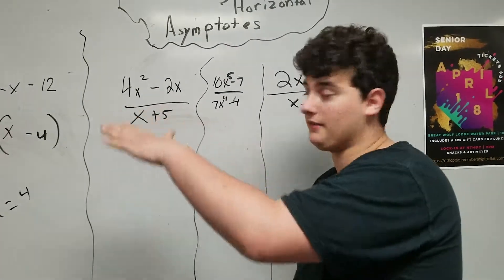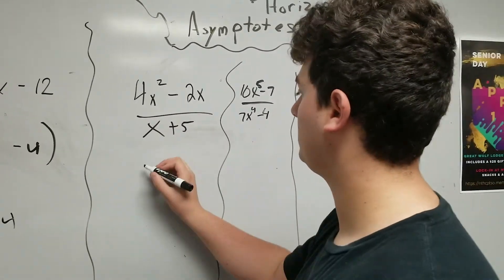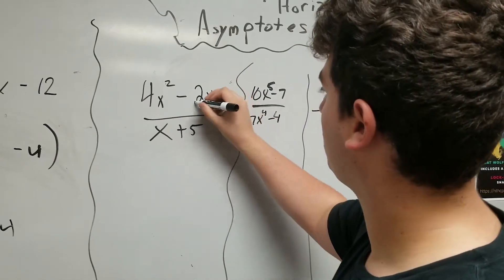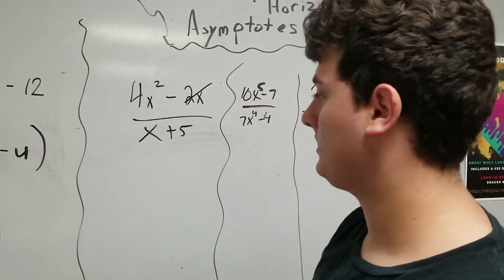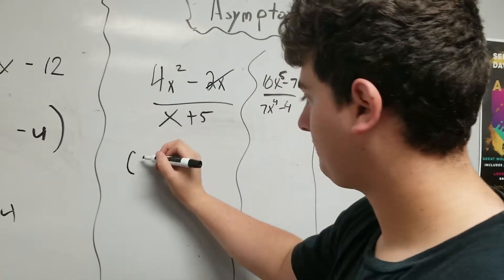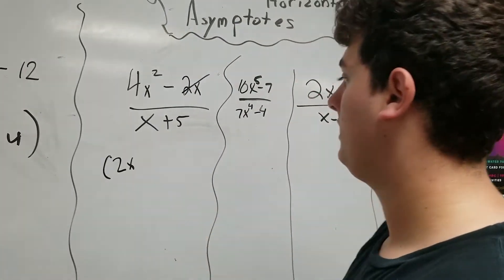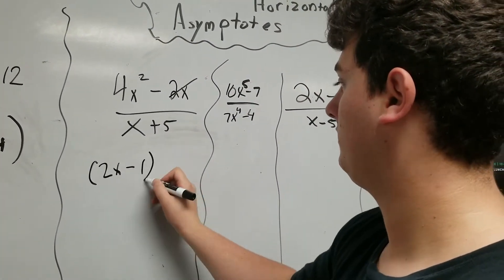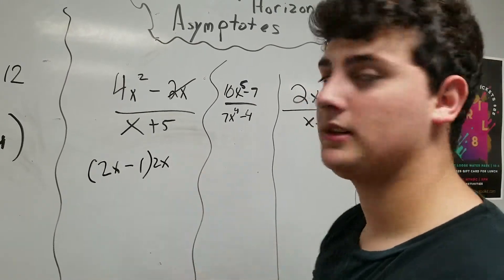I'm going to factor like we did earlier, and I can see that dividing, we can divide this whole part from the 4x. So I'm going to get 2x minus 1 and then 2x on the other side.